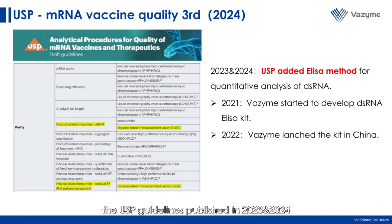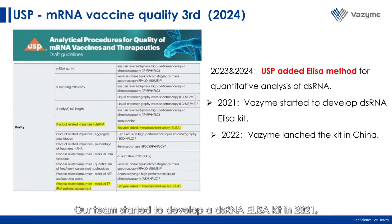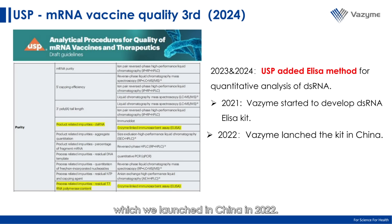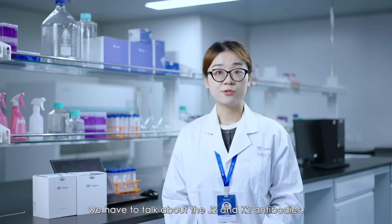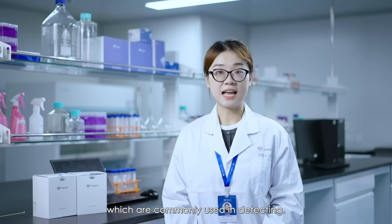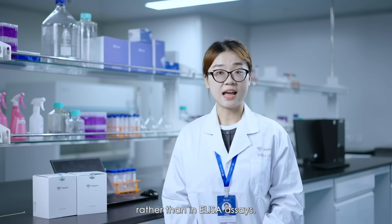In response to these challenges, the USP guidelines published in 2023 and 2024 have introduced an ELISA method specifically for the quantitative analysis of dsRNA. Our team started to develop a dsRNA ELISA kit in 2021, which we launched in China in 2022. When discussing the quantitative analysis of dsRNA, we have to talk about J2 and K2 antibodies, which are commonly used in detection. However, they are typically used in methods like immunofluorescence and immunoblotting rather than in ELISA assays.